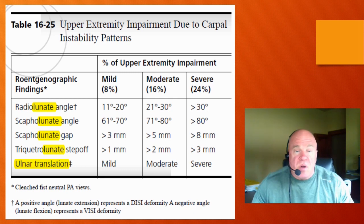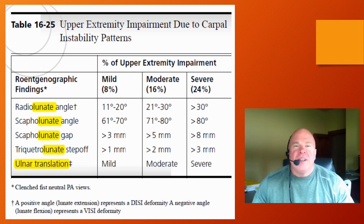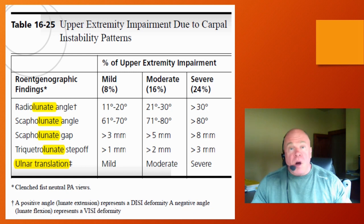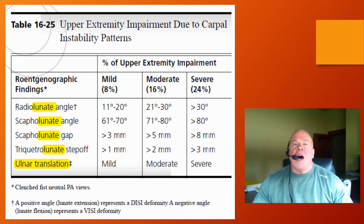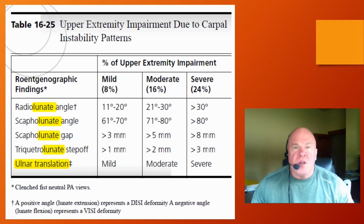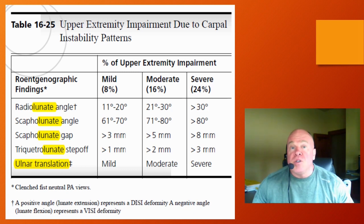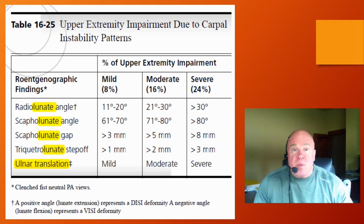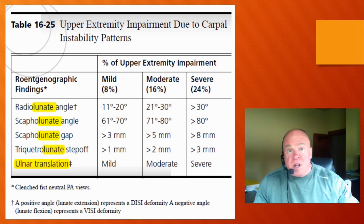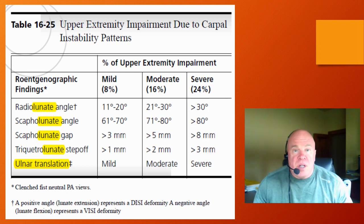Table 16-25 is quite interesting — it provides permanent impairment ratings for some of the common dissociative instability patterns and also for some of the non-dissociative instability patterns. That's how the AMA Guides represents these different classifications.